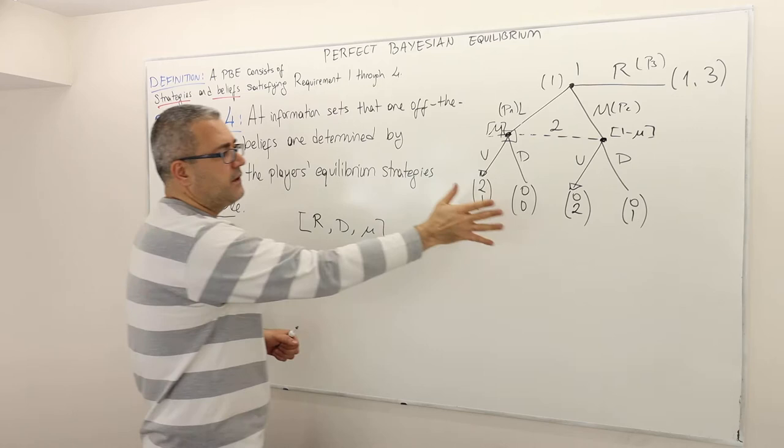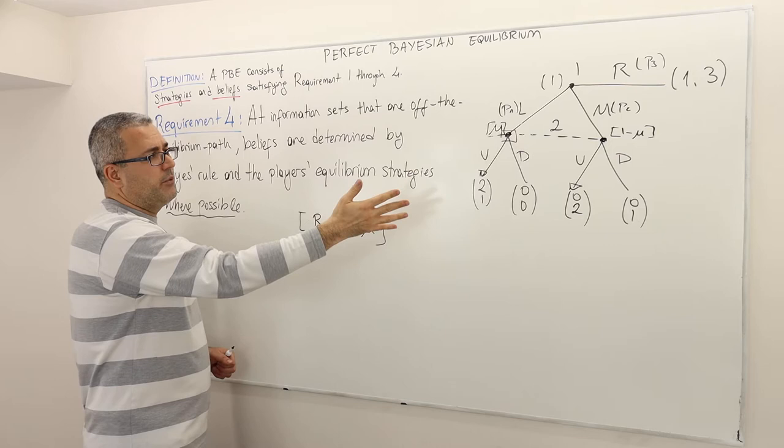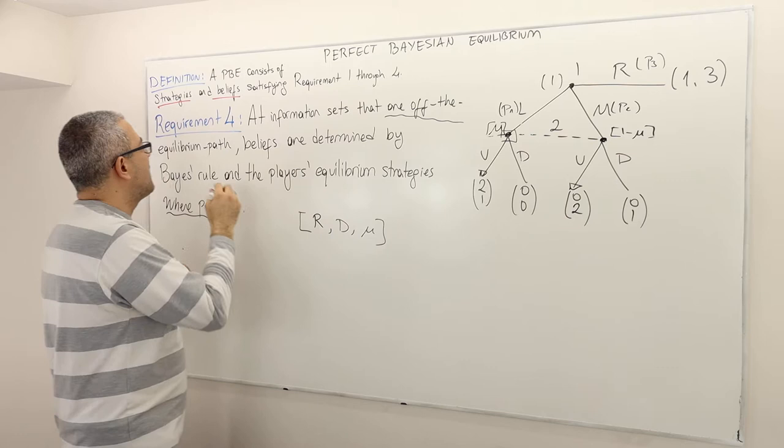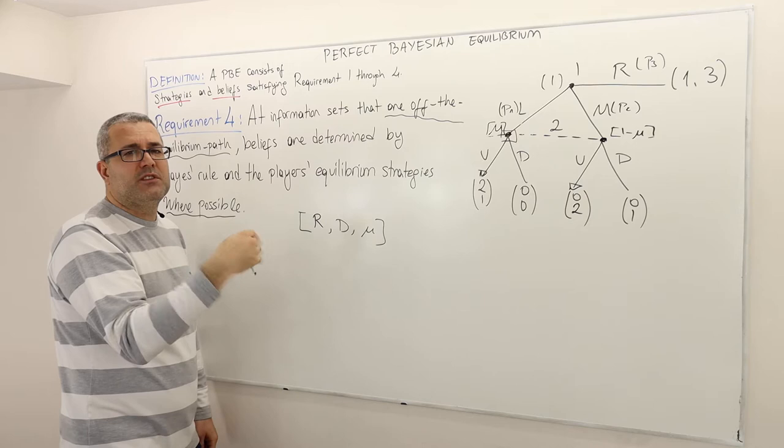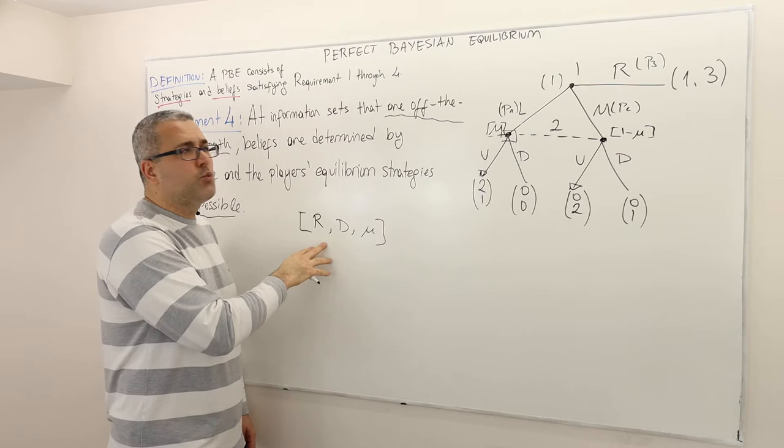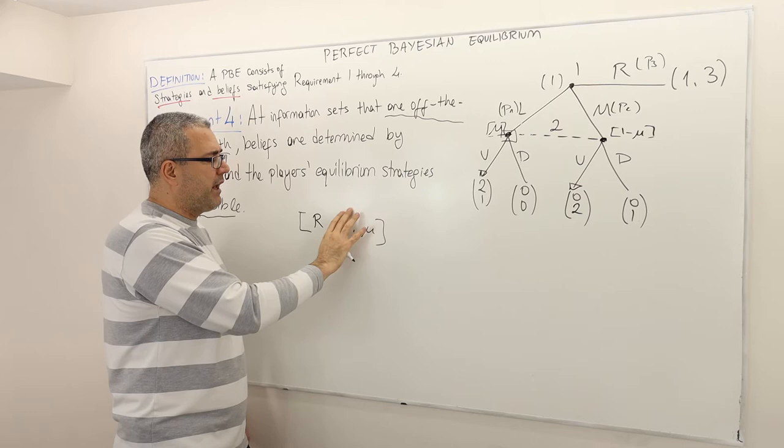This is the first example — we've been working on this game since the beginning. Remember, this requirement is all about information sets that are off the equilibrium path, or strategy profiles where information sets are off the equilibrium path. In this particular game, there is just one type of strategy profile where the information set can be off the equilibrium path, and that is when player one plays right (R) with probability one. It doesn't really matter what player two plays. So let's say the profile is (R, D) with some belief system mu.